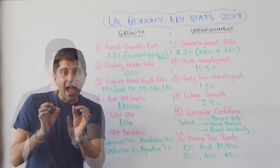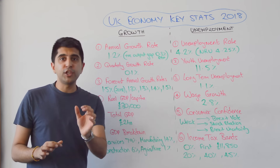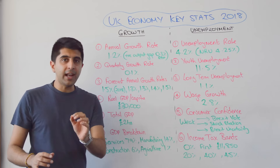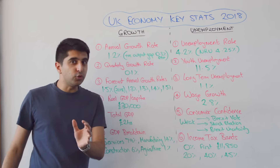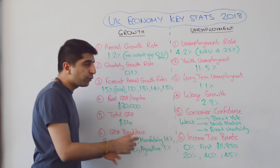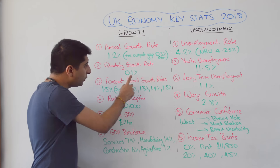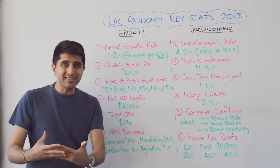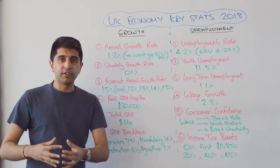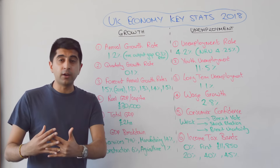We're going to start with economic growth. The annual growth rate in the UK economy — that's growth from Q1 of 2017 through to Q1 of 2018 — stands at only 1.2%. That's quite a low figure, driven by a very low growth figure for Q1 of 2018 of only 0.1%. It's very easy to blame the bad weather for that slowdown in growth.